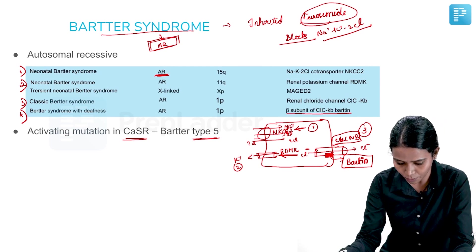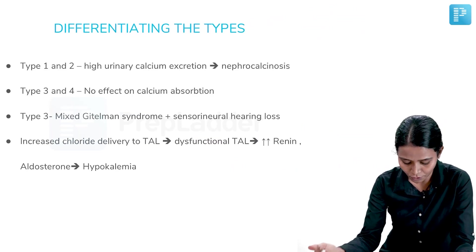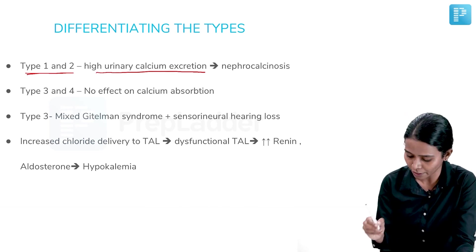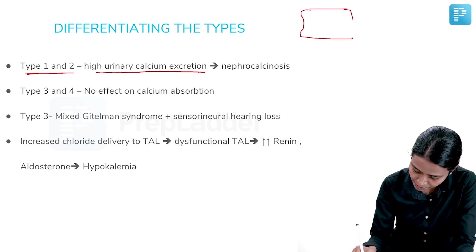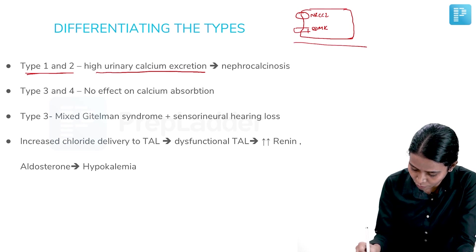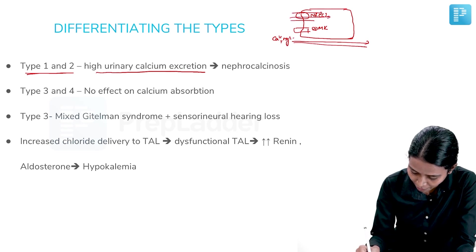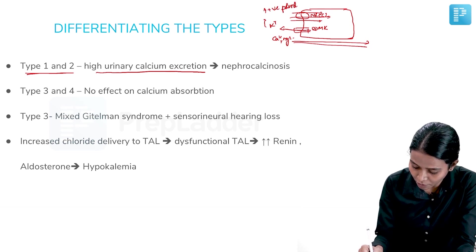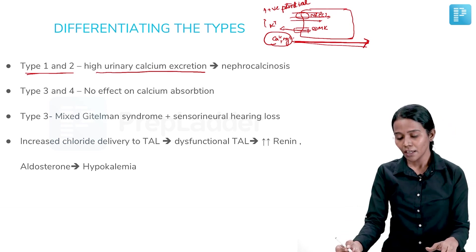For all practical purposes, Bartter syndrome is an autosomal recessive disorder. Types 1 and 2 cause high urinary calcium excretion and nephrocalcinosis. In the thick ascending limb, potassium exiting via ROMK increases the positive luminal potential, which drives paracellular reabsorption of calcium and magnesium to maintain electroneutrality.